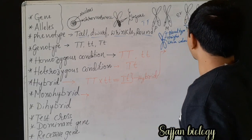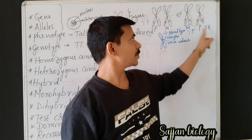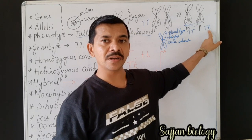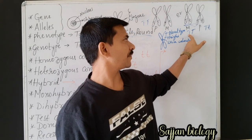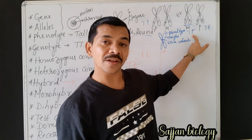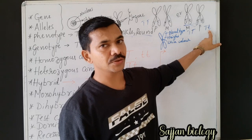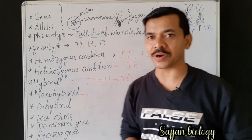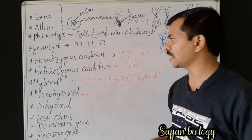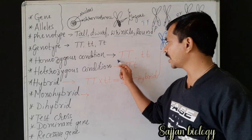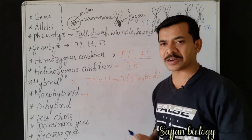If in homologous chromosomes one chromosome has capital T and the other has small t — capital T small t (Tt) — then it is called a heterozygous condition. To summarize: TT or tt is homozygous condition; capital T small t (Tt) is heterozygous condition.